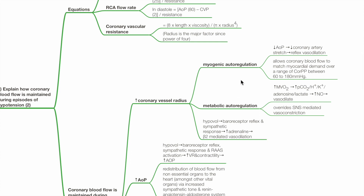Myogenic autoregulation: during reduced aortic pressure, there is reduced coronary artery stretch, and this leads to reflex vessel dilation. The autoregulatory range is between a coronary perfusion pressure of 60 to 180 mmHg.